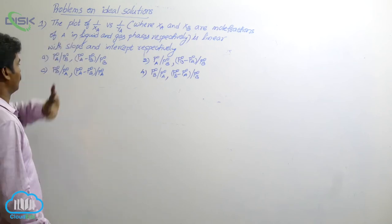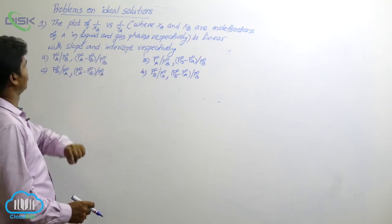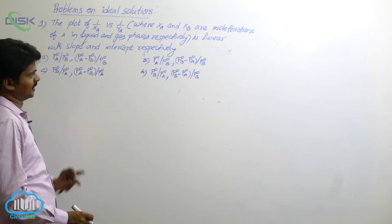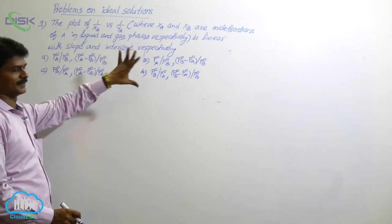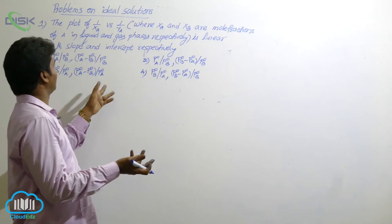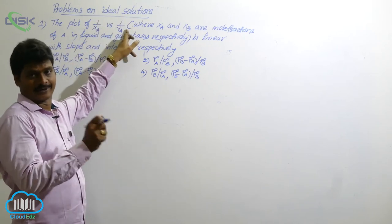The plot of 1 by XA versus 1 by YA, where XA and YA are mole fractions of A in liquid and gas phases respectively, is linear with slope and intercept respectively. Here, graph between 1 by XA and 1 by YA we have to draw.